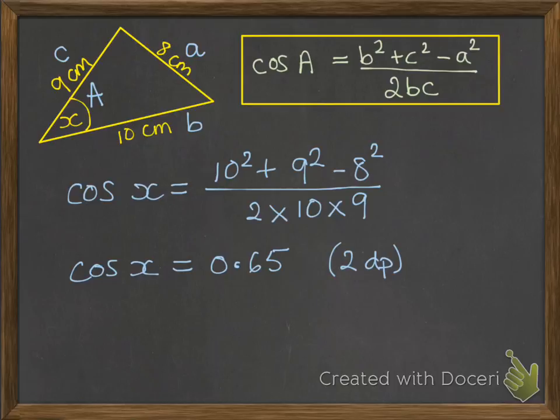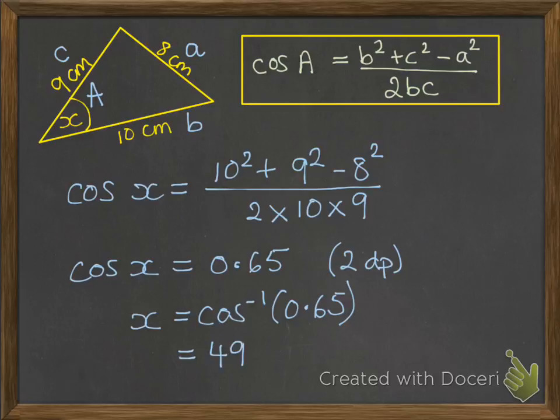Once again leave that answer in your calculator and recall it using your answer button that's above the equals. So now x will be the inverse cos of that 0.65 which will call up from your answer function, which gives us the final answer of 49.5 degrees to one decimal place.